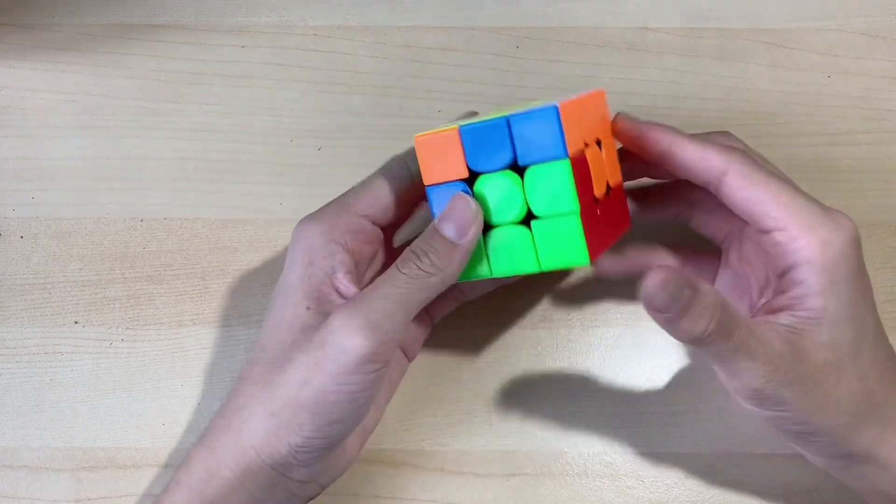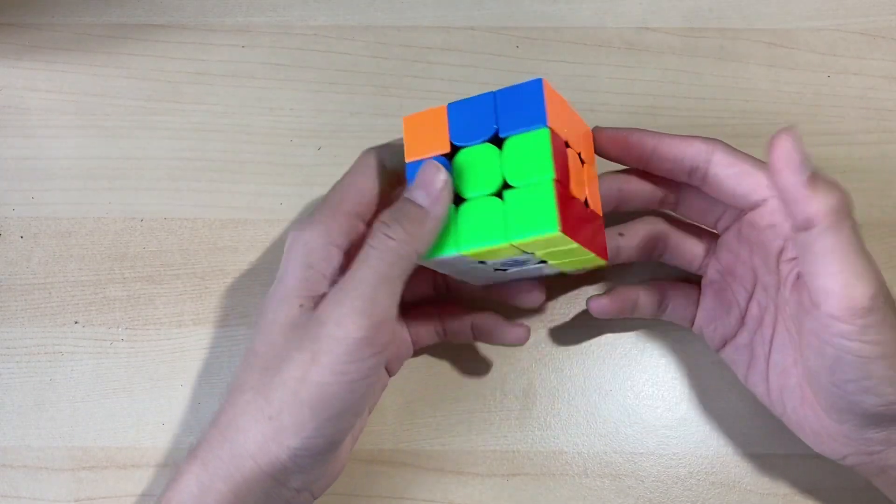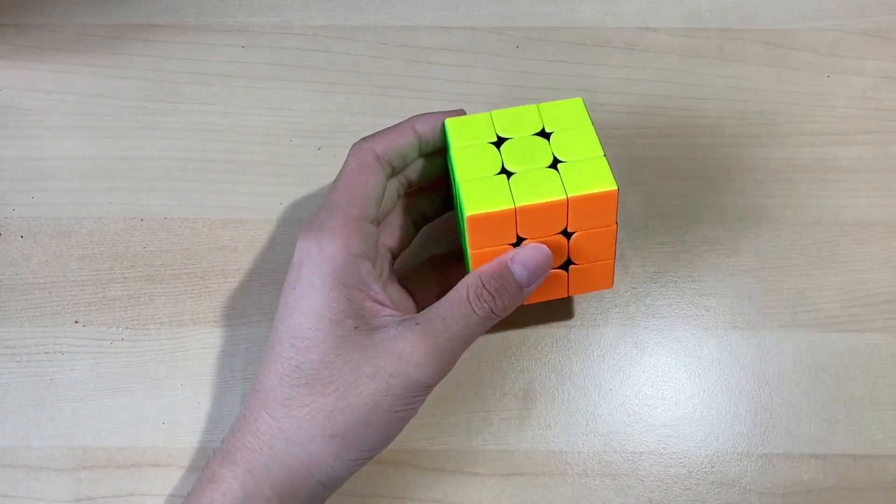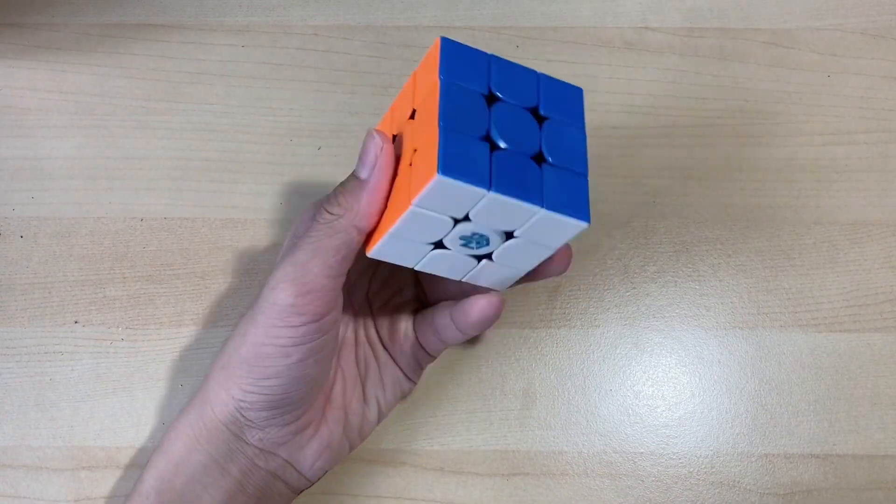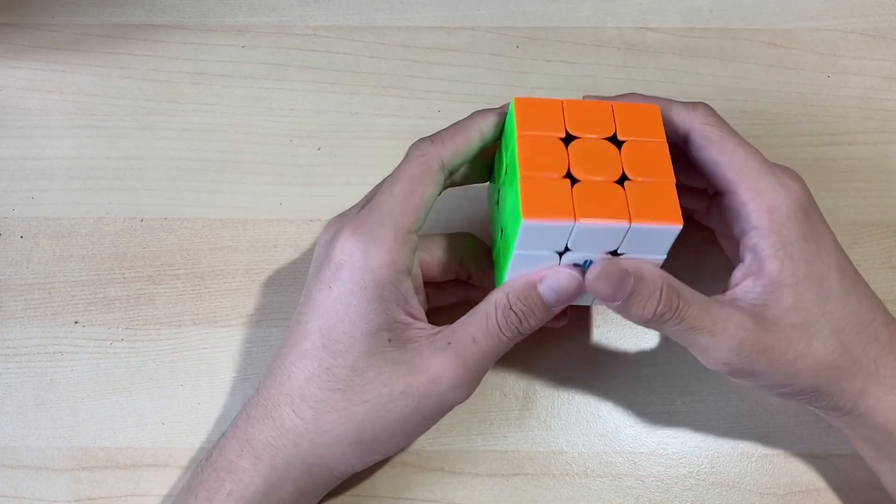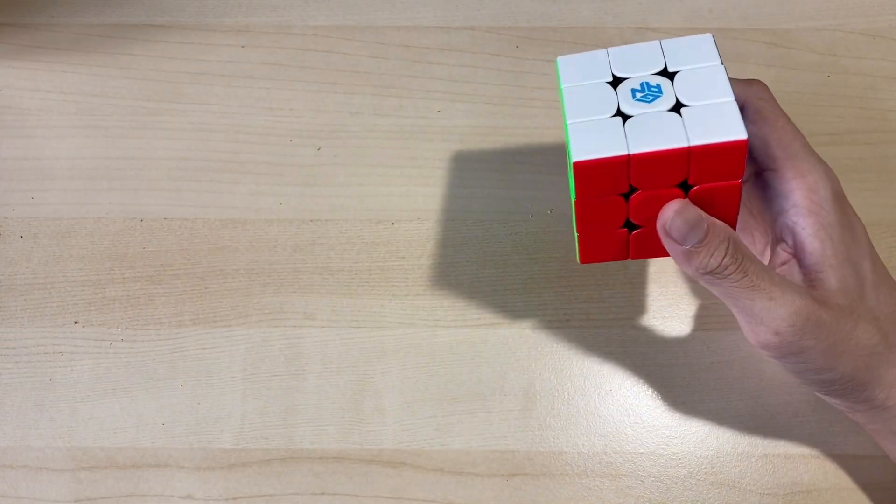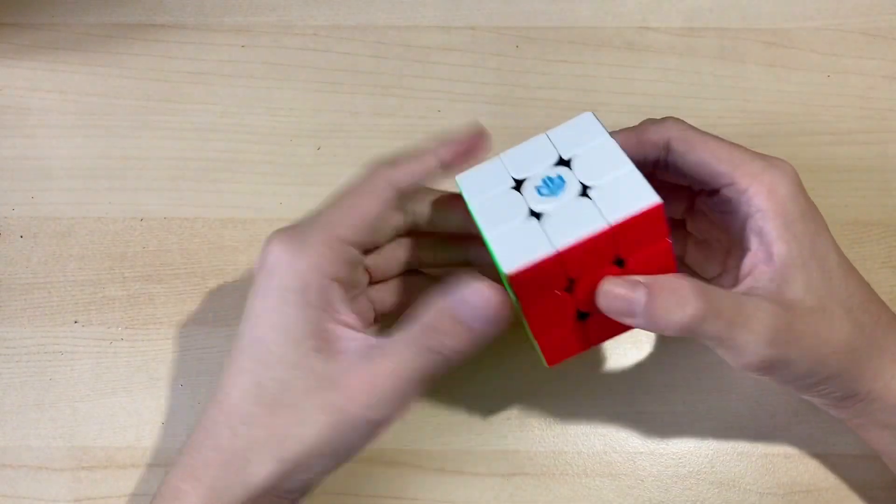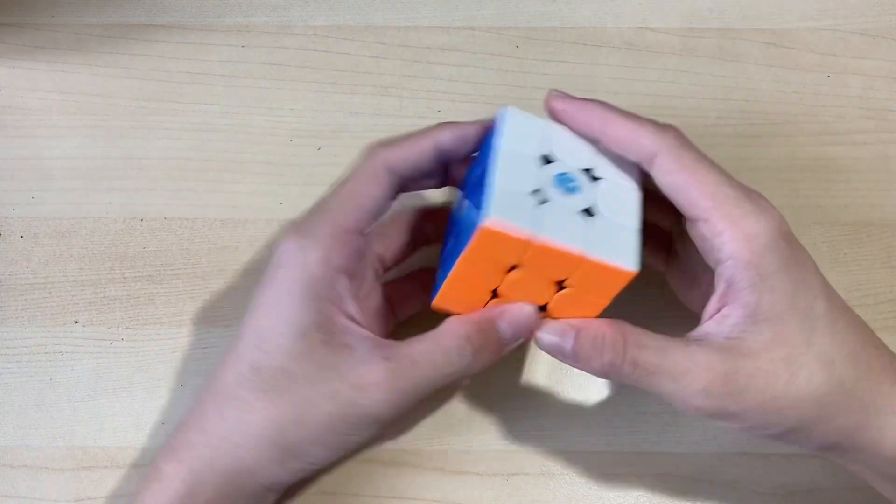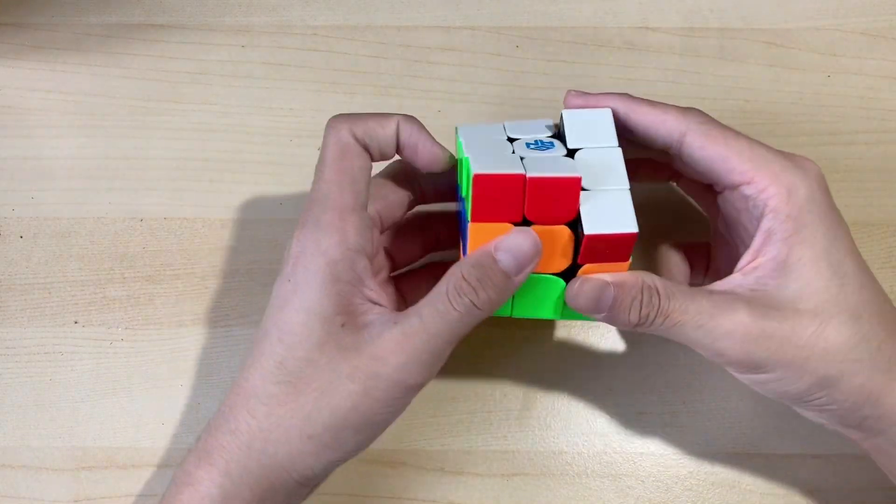I don't know. Okay, so let's solve the cube with the CFOP method now. Okay, so let's go to our fourth method, is to solve the cube upside down, which means the cross color, which I'll be solving on the white side, for me to be on top. So let's grab the cube.